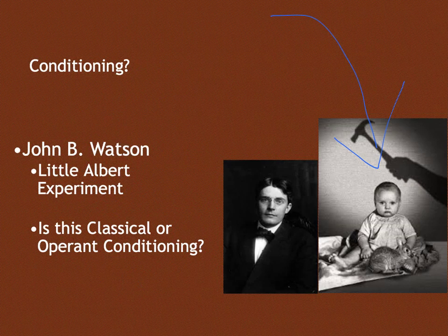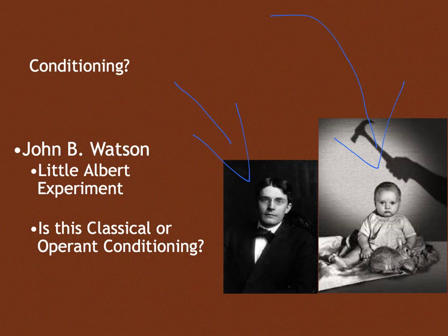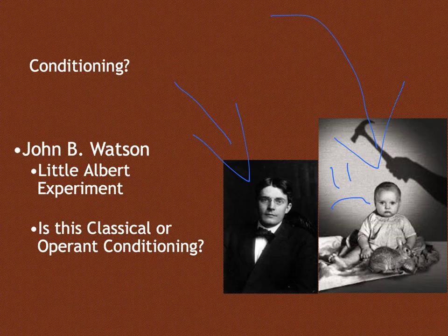When Albert saw the bunny for the first time, he kind of just looked at it and pet it a little bit. But after a few minutes of Baby Albert playing with the bunny, John B. Watson would sneak up behind Baby Albert and bang a gong with a hammer as loud as he could, which scared the living daylights out of Baby Albert. Baby Albert associated that feeling — that emotion of fear — with the presence of the bunny. From that point forward, Baby Albert was terrified of not just the white fluffy bunny, but of everything white and fluffy.